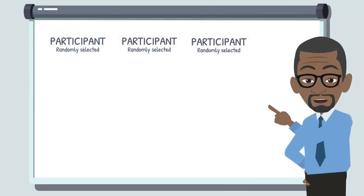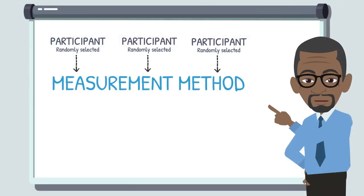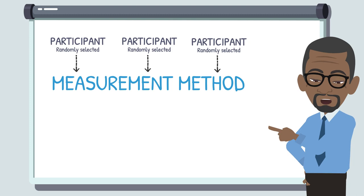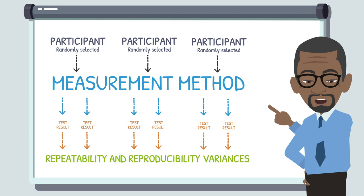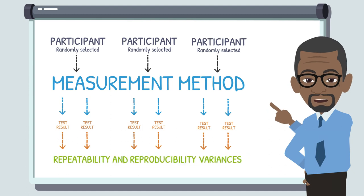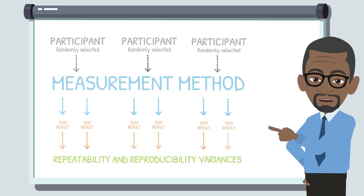Instead, the method's accuracy will be assessed in terms of precision, using an interlaboratory comparison based on an appropriate experimental design. Randomly selected participants use the same measurement method and apply it rigorously. They report at least two independent test results. The purpose is to estimate the repeatability variance and reproducibility variance.